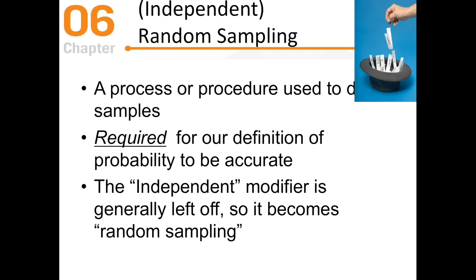Independent random sampling — usually just called random sampling — is a process used to pull samples from a population. It's required for our definition of probability to be accurate. You have to do random sampling; you can't just cherry-pick who you want in your study. You need a good cross section of the population and then pull from that population to get your sample.